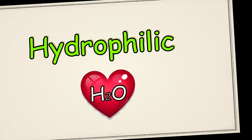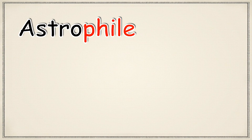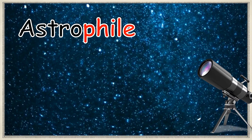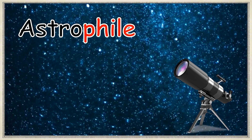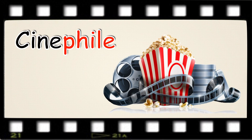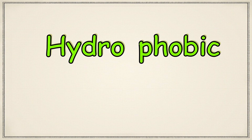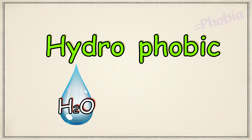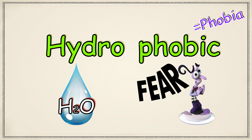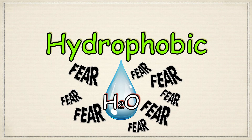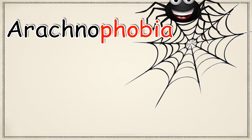For example, 'astrophile' means a person who loves stars and astronomy, and 'cinephile' is a person who is fond of the cinema or movies. Now, the opposite of hydrophilic is hydrophobic. In Greek, 'hydro' means water and 'phobic' or 'phobia' means fear. Therefore, hydrophobic means water fearing. For example, 'arachnophobia' means fear of spiders.